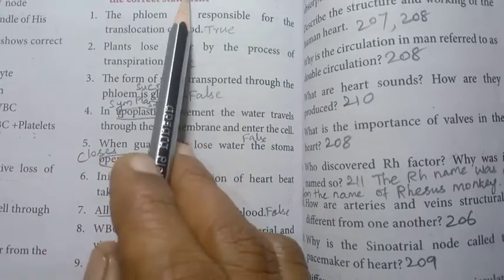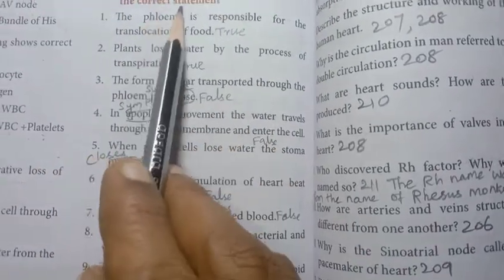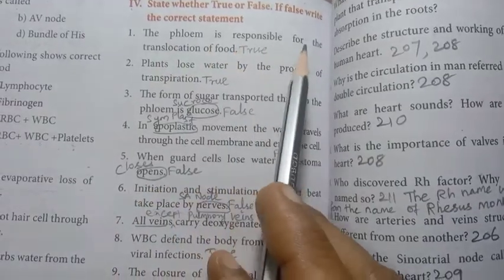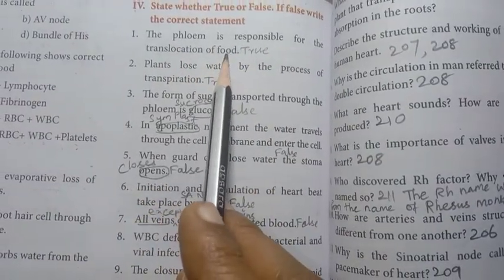Roman number four: state whether true or false. If false, write the correct statement. First one: the phloem is responsible for the translocation of food. The statement is true.